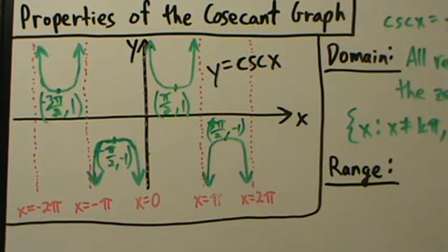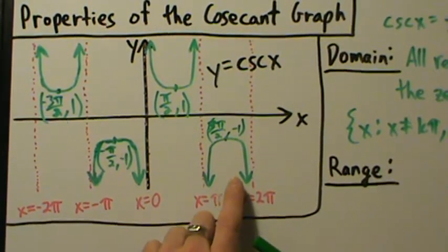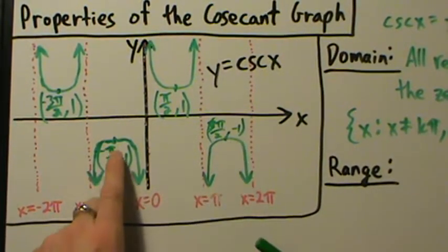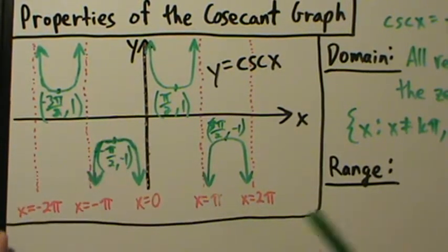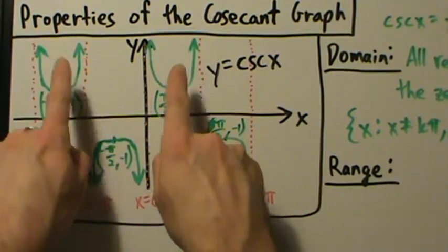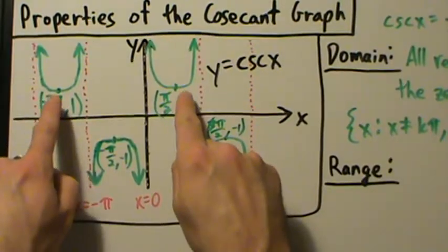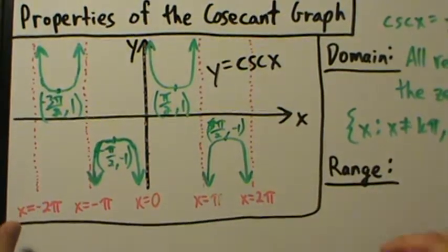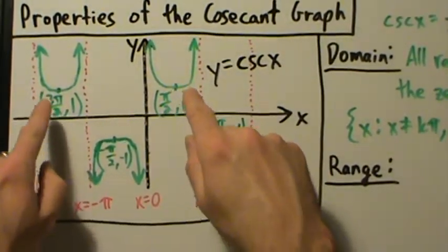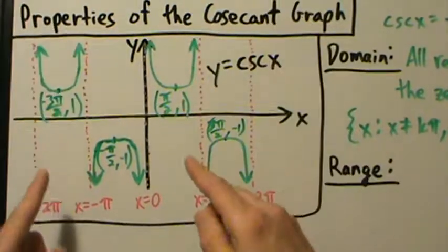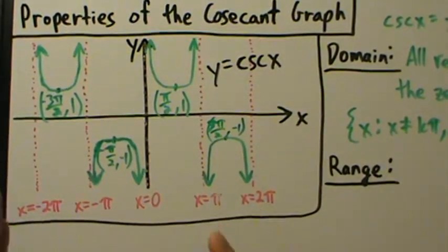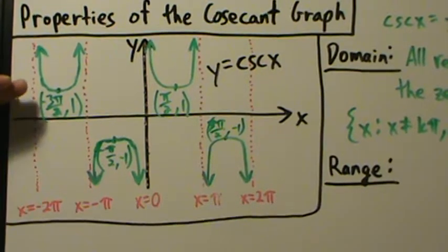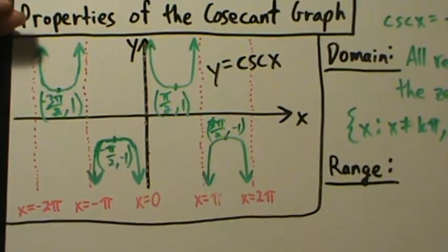The main point is: what are the y-coordinates? Y is negative 1 here, negative 1 here, positive 1 here, positive 1 here. Looking at these pieces, if you're at y equals positive 1 or anywhere above, you're going to have some piece of the graph there. Starting at y equals 1, no matter how far up you go, you're still going to have a piece of the graph there. So every value of y greater than or equal to 1 is part of the range.